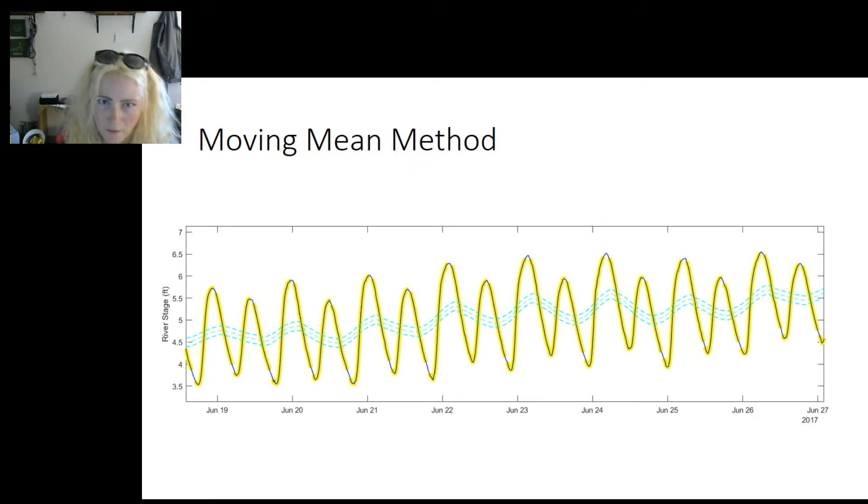Referring to the graph, the Moving Mean is the middle light blue line. And the light blue lines above and below the Moving Mean line are the 0.1 foot above and below the Moving Mean. The yellow is a precursory identification of the river stage exceeding the head of tide that is determined by the Moving Mean method. The data collected from the river gauge indicates a strong semi-diurnal tidal influence in this area.